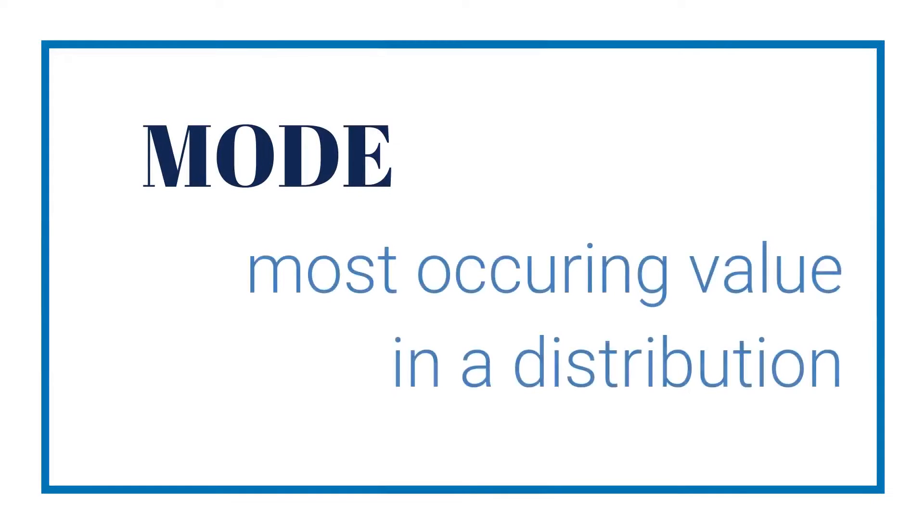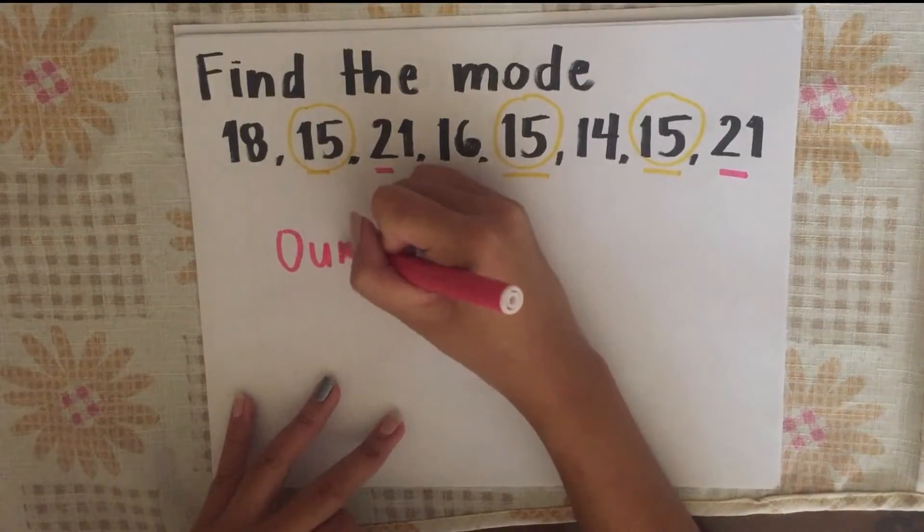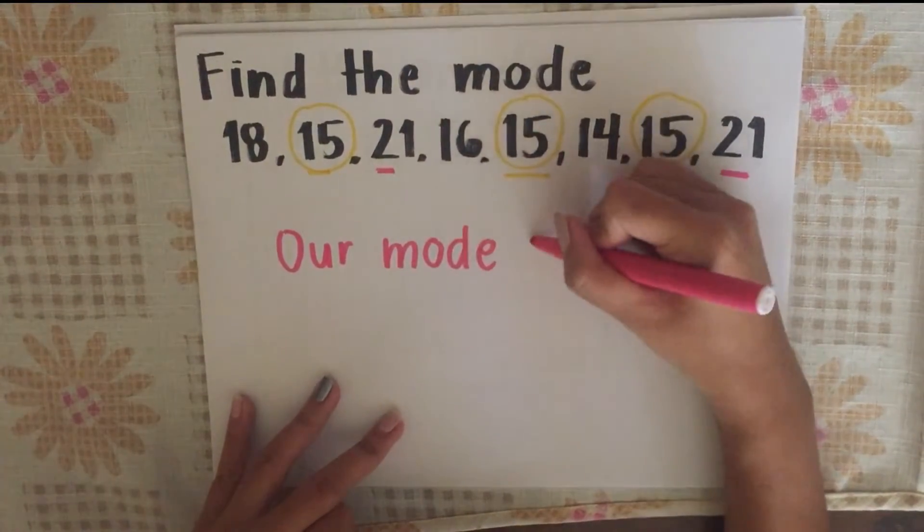The mode is the most commonly occurring value in a distribution. In this sample, 15 appeared twice. This means 15 has the highest frequency. Our mode will be 15.